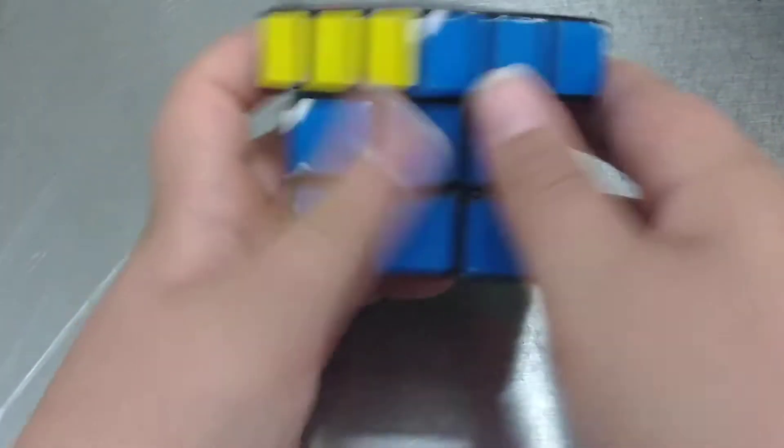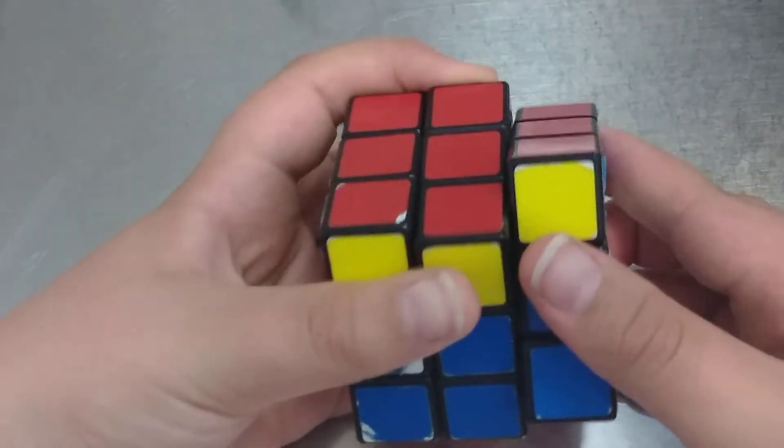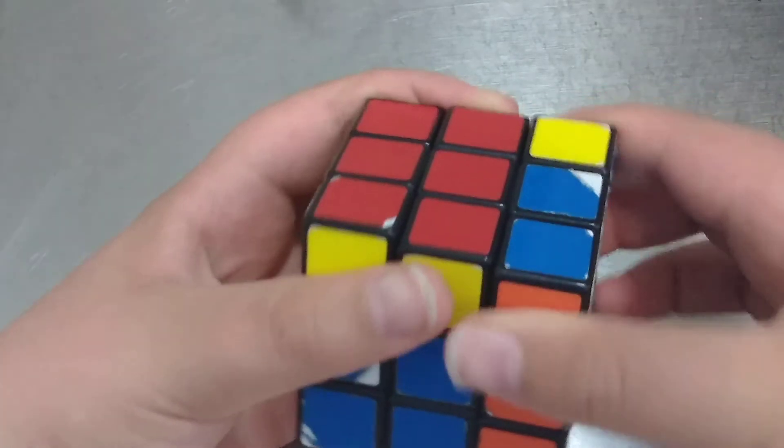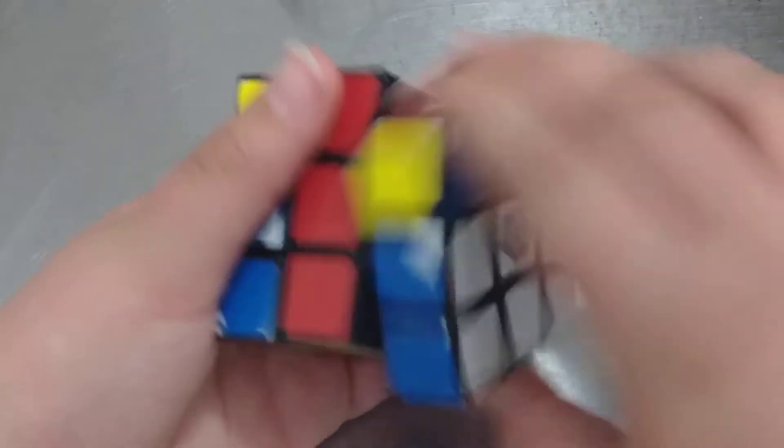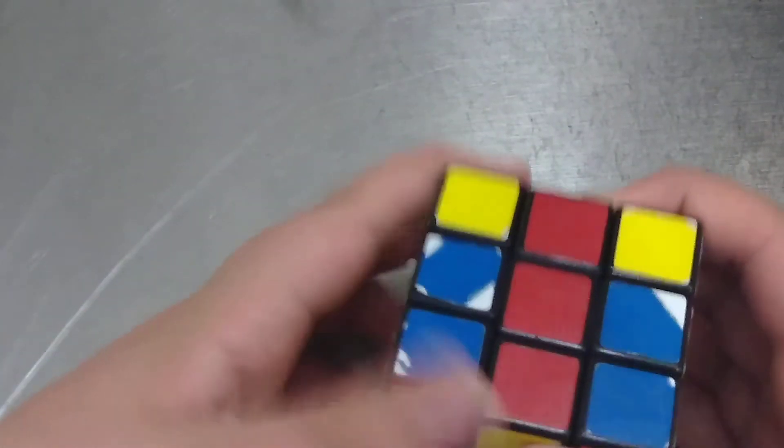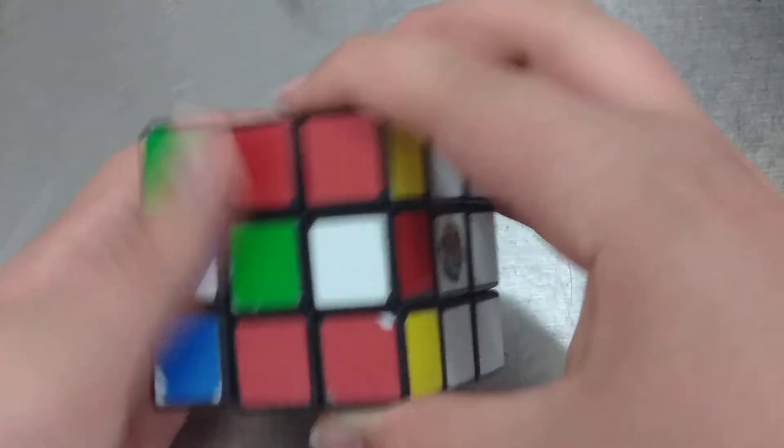So you go top counterclockwise, and then you just basically want to move the middle layer down, which is basically right up, right clockwise and left clockwise. So you just go here, and then you want to just keep doing that.